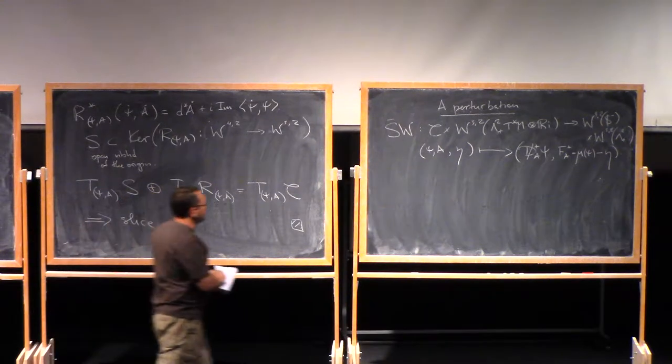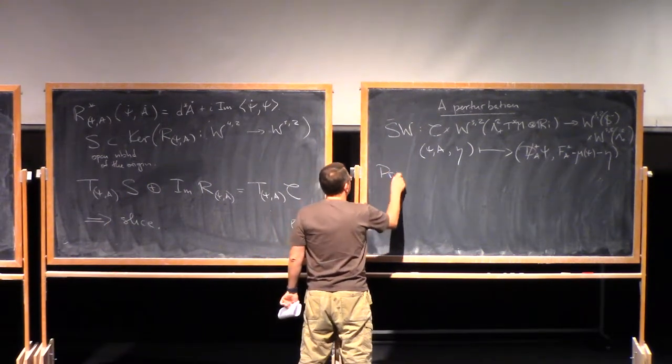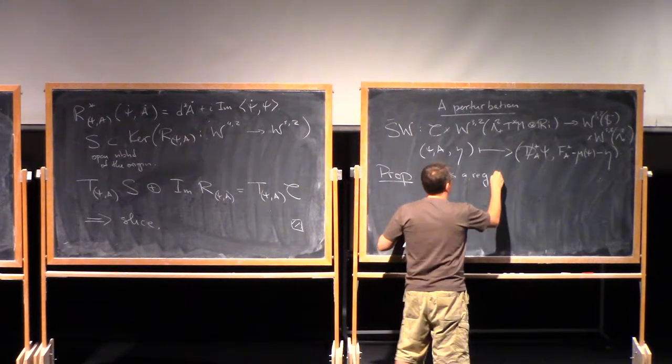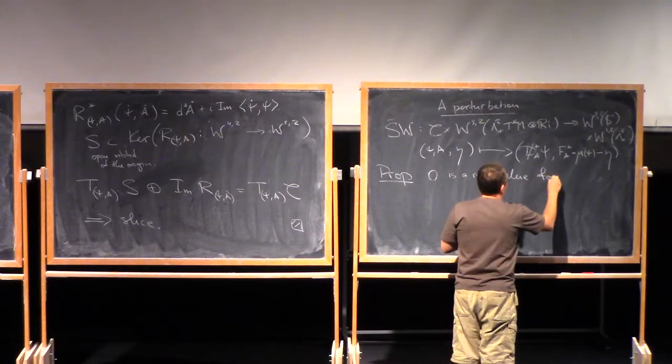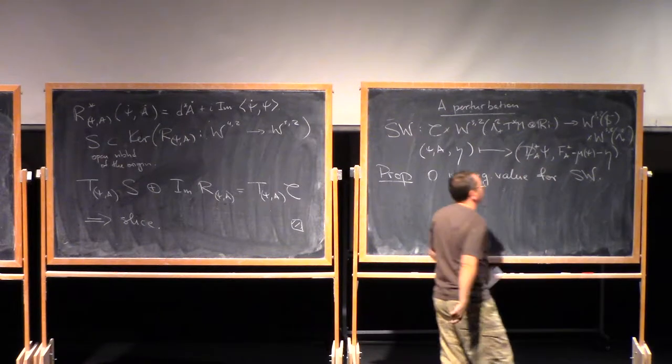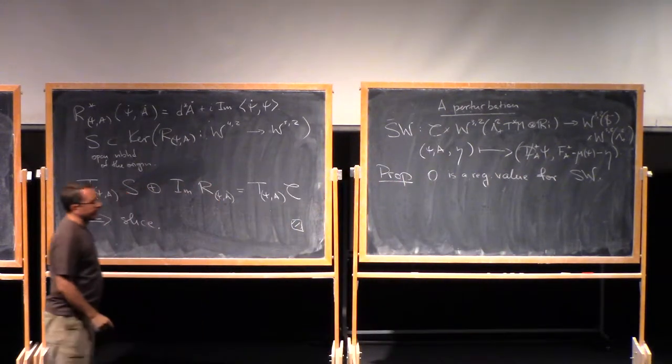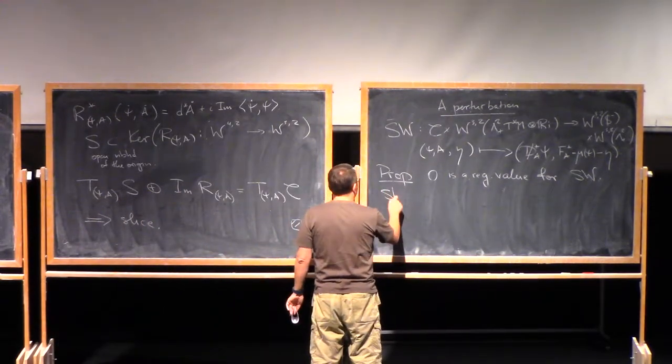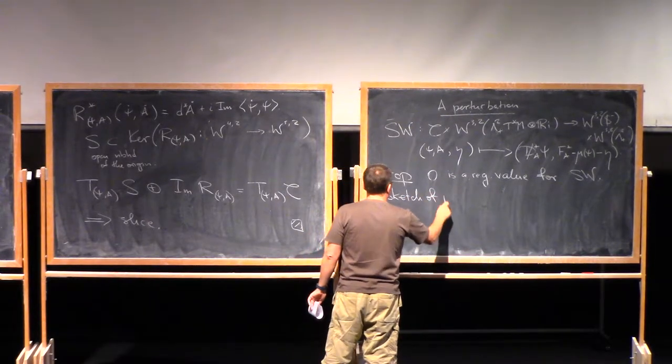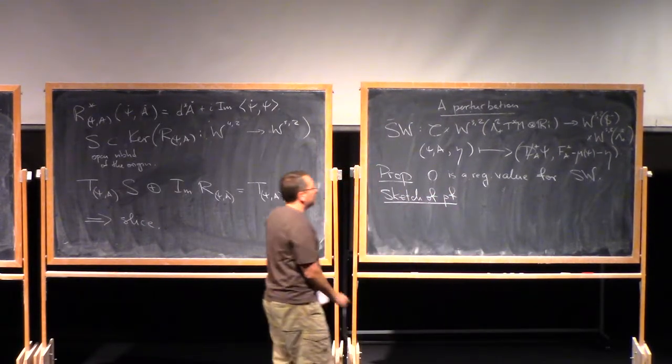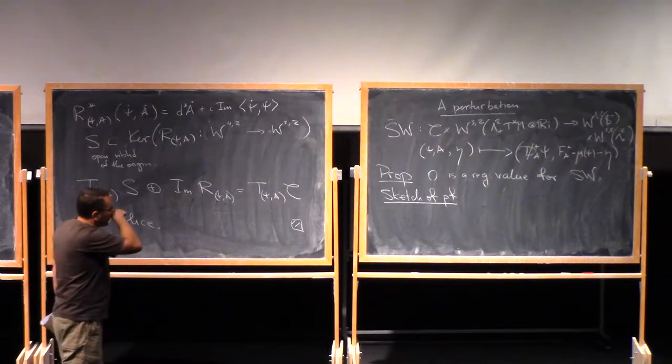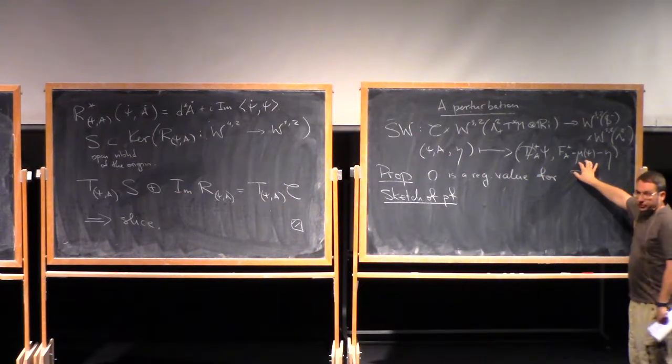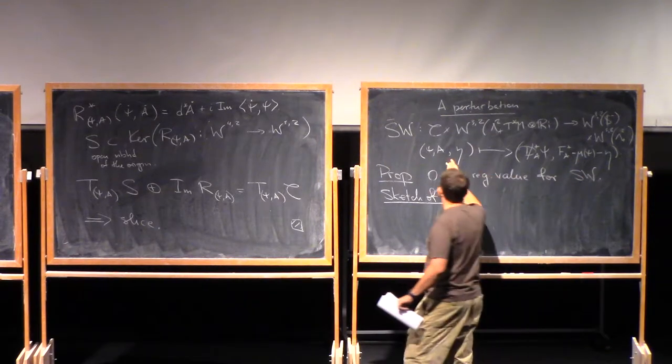The point why we are doing this is the following proposition can be proven: zero is a regular value for this perturbed map. I don't want to give you the full proof, but at least an idea how this works. What you can easily see is that if you differentiate this map with respect to η, it is surjective on the second component. So here is nothing to prove.